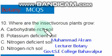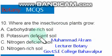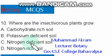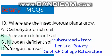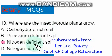Where do insectivorous plants grow? The options include carbohydrate-rich soil, potassium-deficient soil, and nitrogen-deficient soil. The right option is nitrogen-deficient soil — insectivorous plants grow in nitrogen-deficient soils.